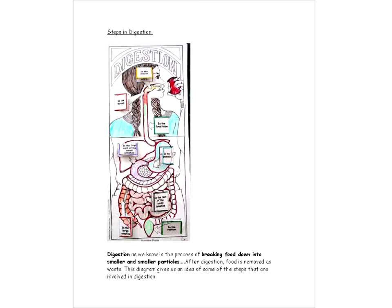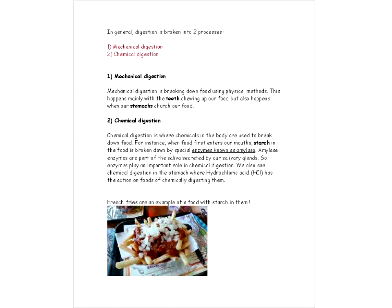So, steps in digestion. It'd be a good thing to look at this diagram here. It's kind of a cool one. Pop open the little sort of doors here and see what's underneath. And so we're looking at the steps in digestion. So digestion, of course, is the process of breaking food down into smaller and smaller particles. After digestion, food is removed as waste. So this diagram gives us an idea of some of the steps that are involved. So in general, digestion is broken into two processes and those are mechanical digestion and chemical digestion. Now mechanical digestion is breaking down food using physical methods. So mainly this is happening with our teeth when we chew our food, but it also happens with different organs such as our stomach when they churn our food. Again, they're breaking it up by physical means.